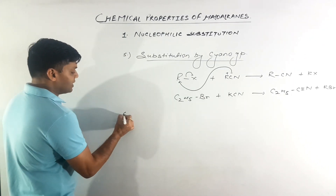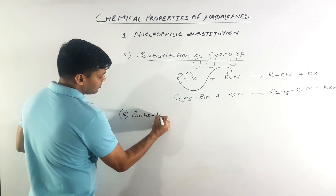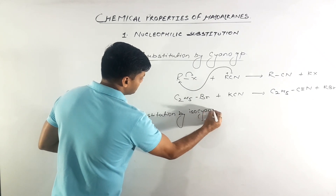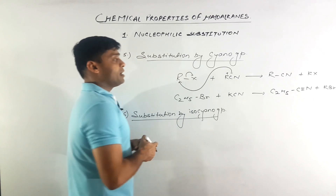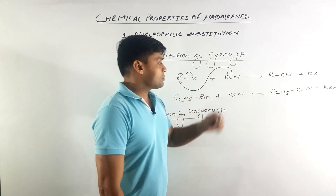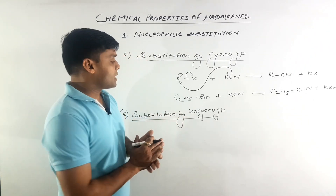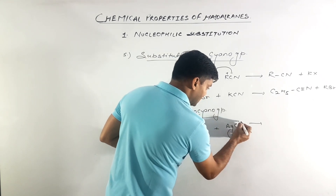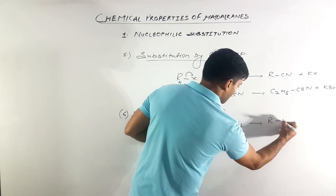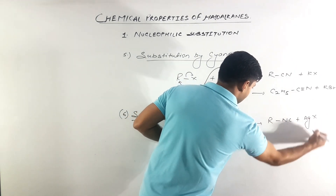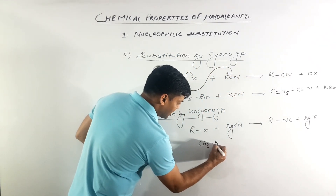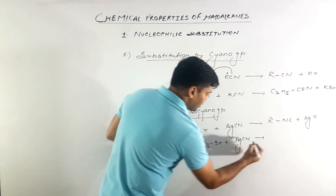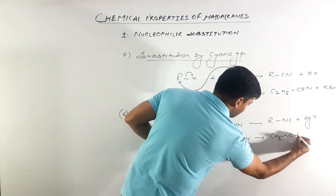The next substitution reaction we will discuss is substitution by isocyanide group. याद रखेगा अगर हमें cyanides बनाने हैं तो we take potassium cyanide या sodium cyanide as the reagent, लेकिन अगर हमें isocyanides बनाने हैं तो हम इसी alkyl halide को AgCN से react करते हैं. In this case nitrogen attacks through its lone pair over the alkyl group, resulting in the formation of RNC plus AgX. For example, CH₃Br reacted with AgCN — nitrogen attacks the methyl group and forms CH₃NC plus AgBr.